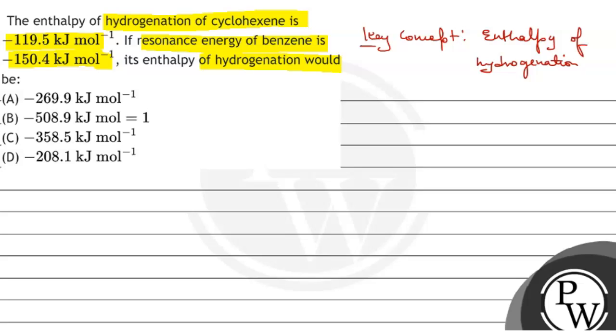We have given the cyclohexane enthalpy of hydrogenation, that is -119.5 kJ/mol. What is this? This is the enthalpy of hydrogenation of cyclohexane.